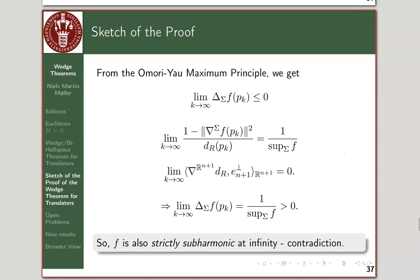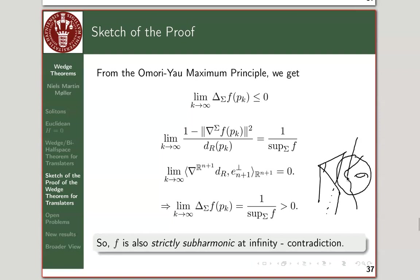The contradiction shows that you cannot have a self-translating surface sitting inside a wedge-shaped region with a non-zero, non-pi angle. The argument uses the Omori-Yau principle combined with the test function that takes the distance to the affine cylinder axis L_r, ensuring that the surface intersects the interior chamber A_r. That is the proof in brief.